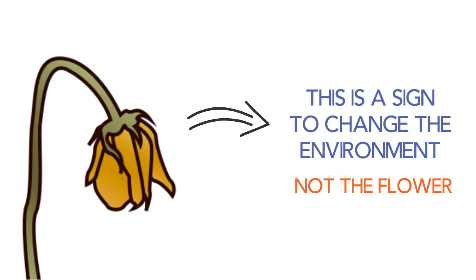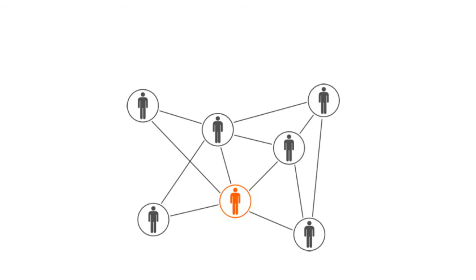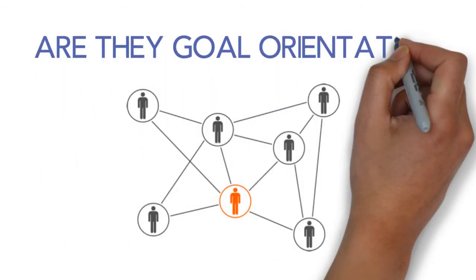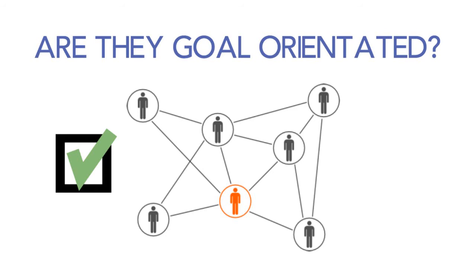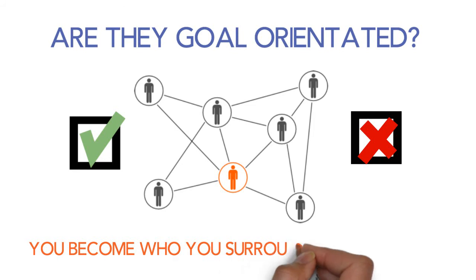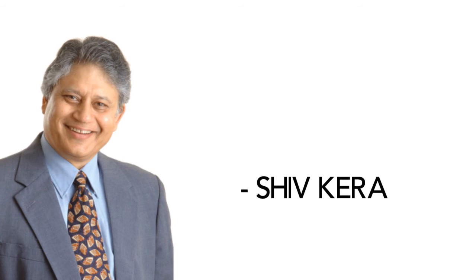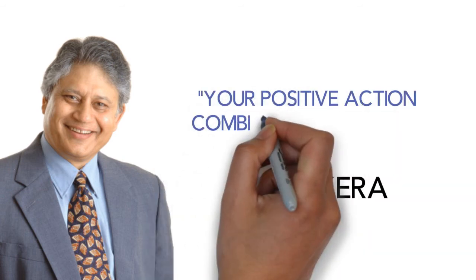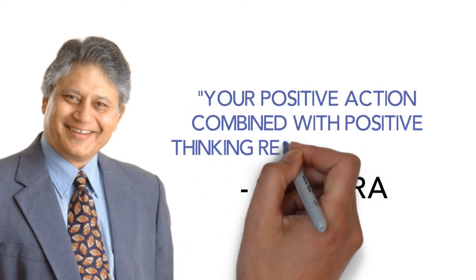So control your environment because you have a choice every single day what you fill your mind with. It's either negativity or positivity. Take a look at the people you surround yourself with. Are they goal oriented? Are you pushing each other to do your best? Or are they bringing you down with their issues and insecurities? Who you surround yourself with has a huge impact on who you will become. Don't fall into the trap of staying around people who can't find happiness in anything. As Shiv Khera says, your positive action combined with positive thinking results in success.